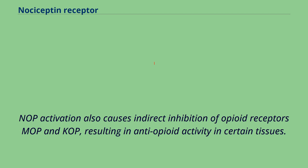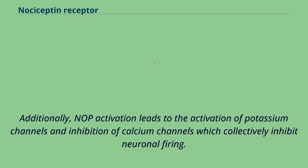NOP activation also causes indirect inhibition of opioid receptors MOP and COP, resulting in anti-opioid activity in certain tissues. Additionally, NOP activation leads to the activation of potassium channels and inhibition of calcium channels, which collectively inhibit neuronal firing.